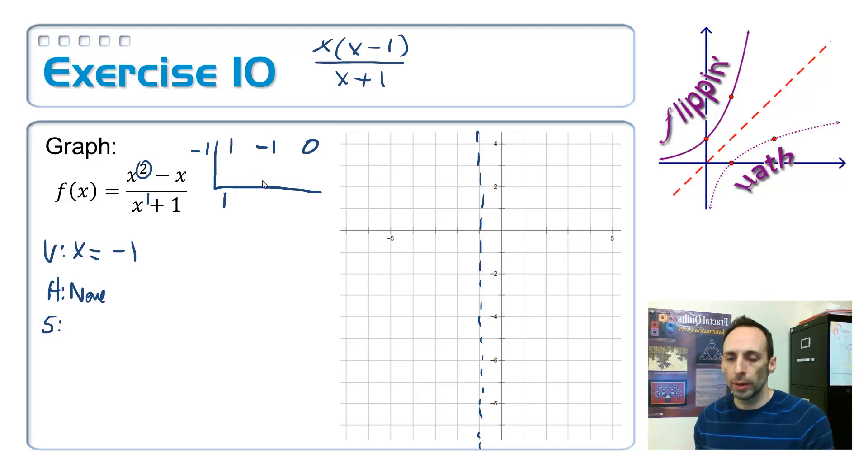Bring down 1. 1 times negative 1. Negative 1. Add them up. Negative 2. Multiply it. Positive 2. 2. That's the remainder. But guess what? It's garbage. That's x minus 2. y equals x minus 2. There is our slant asymptote.